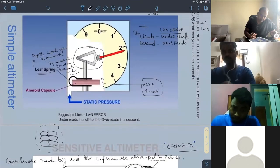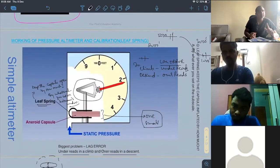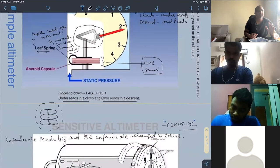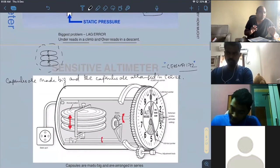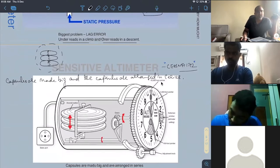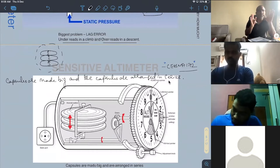So, the only difference between the simple altimeter and the sensitive altimeter is these capsules. These capsules are aneroid wafers which are made big and arranged in series. That is the only change.